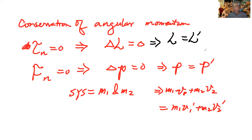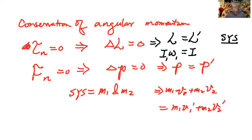For the angular case, the system is often just one object, so we write I·ω = I′·ω′. In the angular rotation case, I can change. So when angular momentum is conserved, L before equals L after: I·ω = I′·ω′. That's the form of angular momentum conservation we're going to work with.